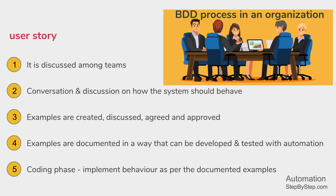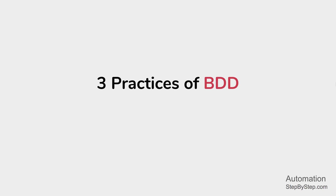We then go into the coding phase where implementation is done based on the documented examples. In the coding phase, we also create automation scenarios or automation tests. These automation tests guide the coding phase — the automation test is created first, which will fail because no code has been developed yet. Eventually the code is developed to make the automation scenario pass.